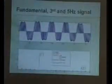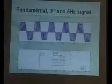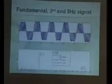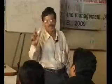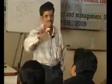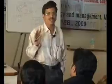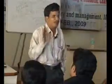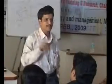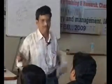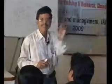Same signal with fundamental, 3rd harmonic, but another 5 Hertz signal added. In this mixed signal I have 50 Hertz, 150 Hertz and another signal of 5 Hertz. Sampling frequency is constant at 3.2 kilo Hertz, that is 64 into 50. I am taking now 5 cycles for analysis. So if I am taking 5 cycles, what is the frequency resolution? 64 into 50 divided by 64 into 5 equals 10 Hertz.